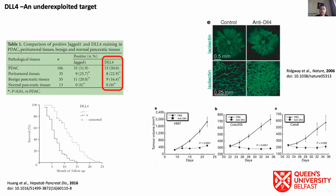Higher DLL4 expression also tends to be prognostic for factors such as tumor stage, size, and invasiveness. DLL4 expression is defined in a number of different cancers, including breast, gastric, colon, prostate, and pancreatic. In PDAC cancers, we see a 50% positivity level for DLL4. And importantly, in pancreatic cancer, which is a very stroma-rich tumor, we see DLL4 expression in both the tumor cells themselves and in the associated stroma.